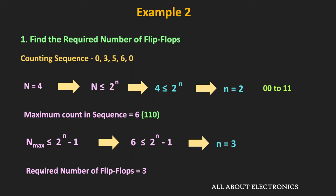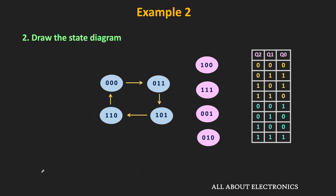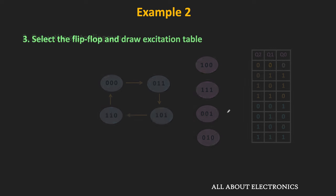Once we have decided on 3 flip-flops, the next step is to draw the state diagram, which shows all possible output states. With 3 flip-flops, there are 8 total states. Out of these 8 states, 4 are valid (the counting sequence 0, 3, 5, 6) and 4 are don't care terms, shown in pink in the state diagram.